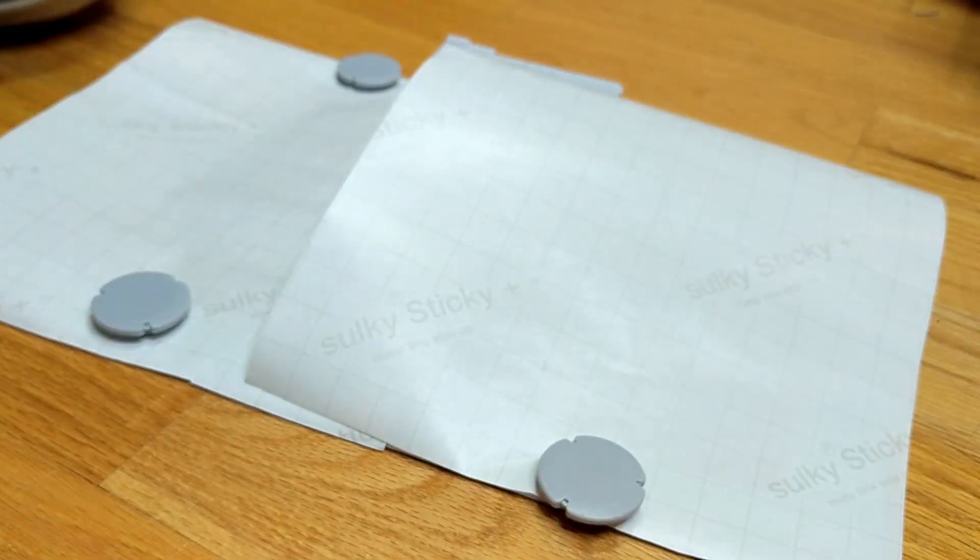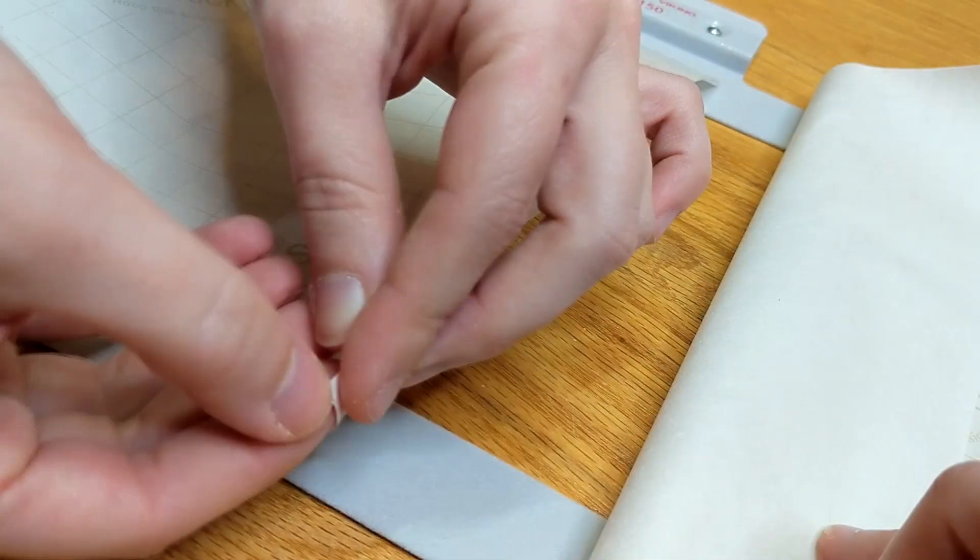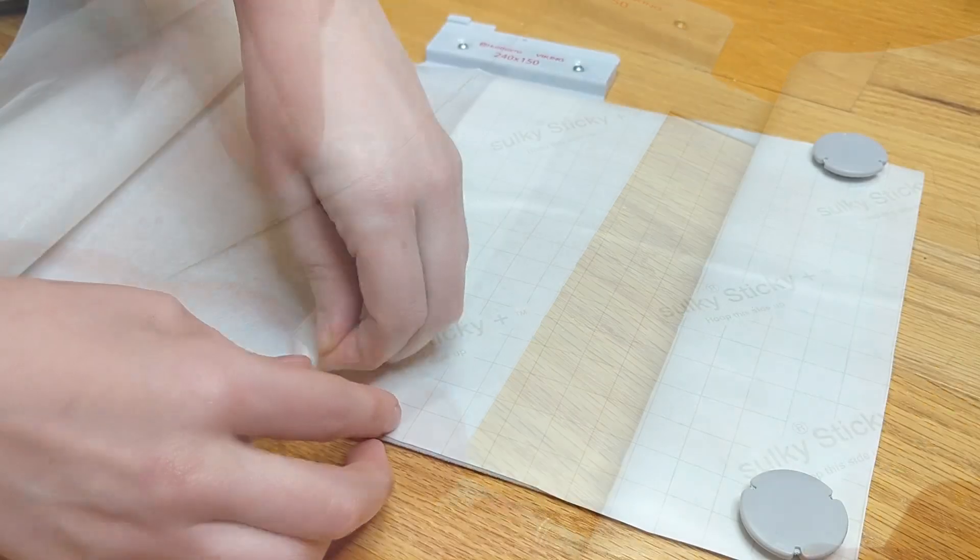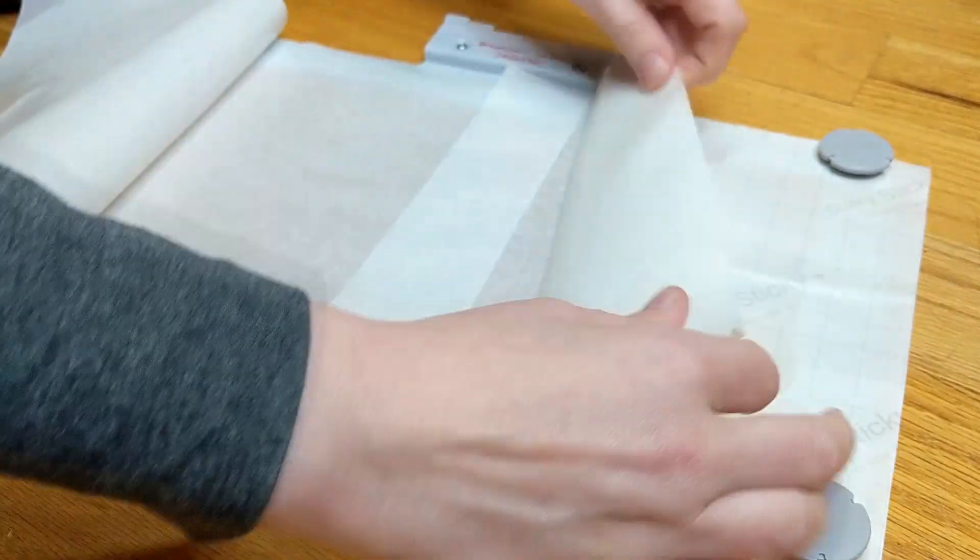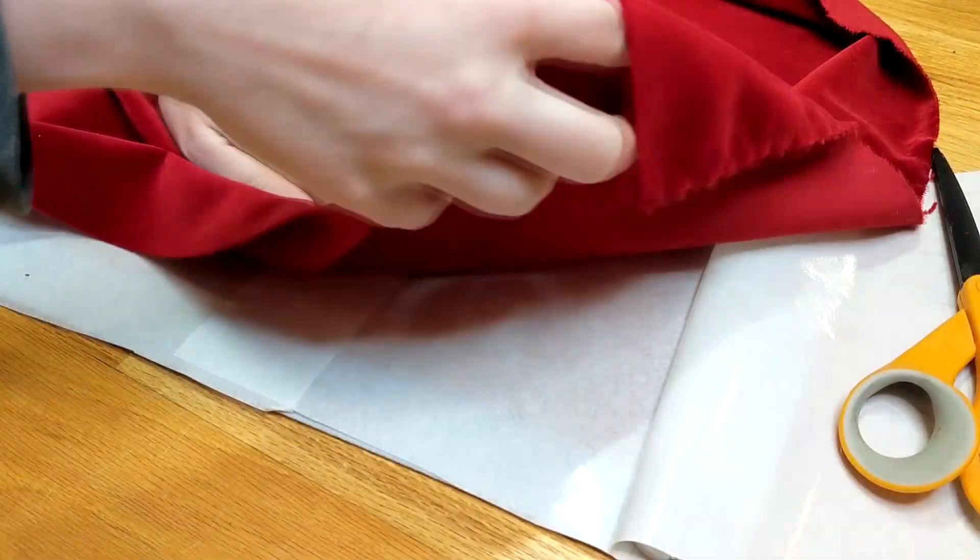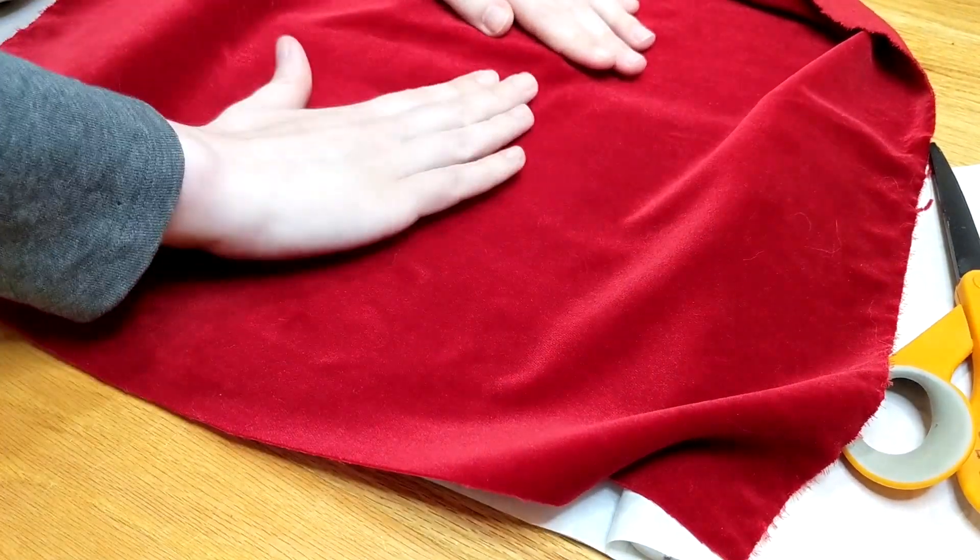To avoid ironing this delicate velvet, you can use a peel and stick stabilizer, or an even better alternative would be a spray adhesive. This temporarily bonds your fabric to a tear-away stabilizer without needing to worry about gumming up the needle.